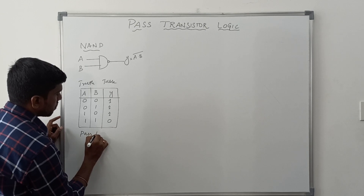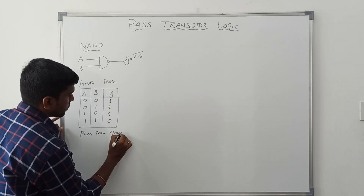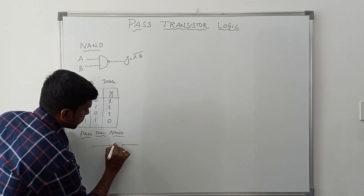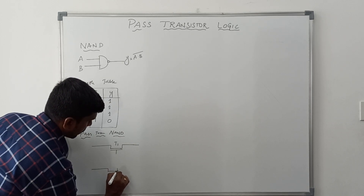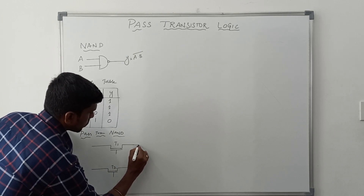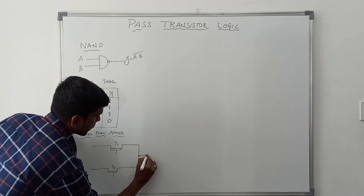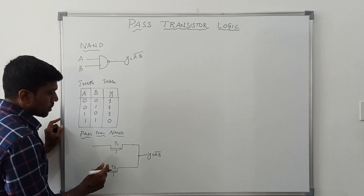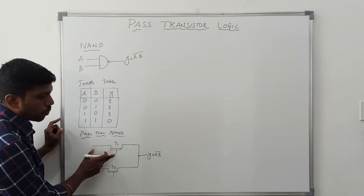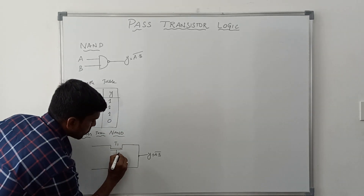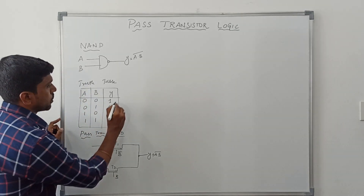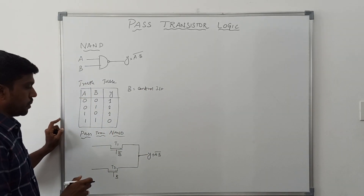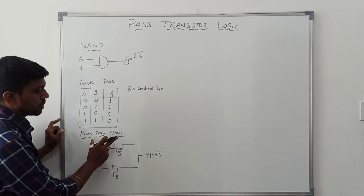Now I am going to design PMOS transistor logic for NAND gate. Here I am taking two NMOS transistors — transistor T1 and transistor T2. The outputs of these two transistors are shorted to get the final result. Y equals A dot B, bar. In this PMOS transistor, we have two input values: one is the controlling input and another is the primary input. B is the control input and A is the primary input. Based on the control input value, the result will be produced in the PMOS transistor.